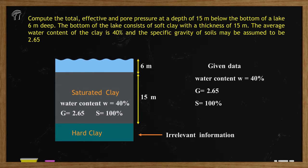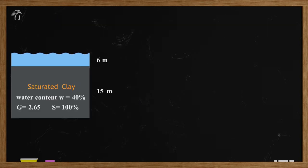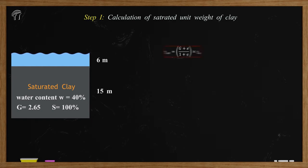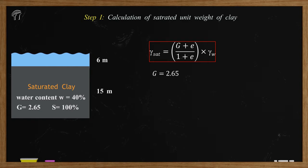Let's start with Step 1: calculation of saturated unit weight of the clay. To calculate effective stress, we need to have the saturated unit weight of the clay, which is not given in the statement, so we will calculate it. Depending upon the data given to us, this is the best possible formula to calculate saturated unit weight. We have the value of G as 2.65, but we don't have the value of void ratio E.